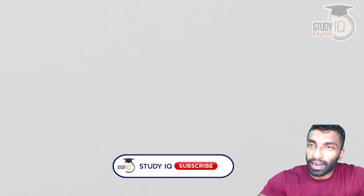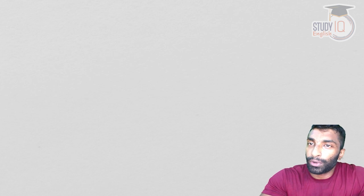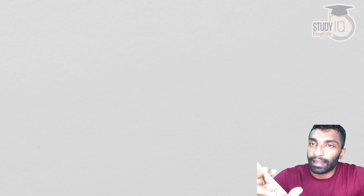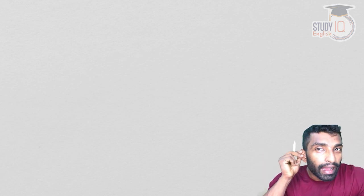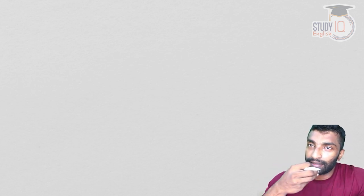Hello guys, welcome to Study IQ. I am Safir. In this session, we are going to continue our discussion on the Mauryan period. We are in the module of Art and Culture and the first chapter is Art and Architecture. We have completed Indus Valley Civilization, which is very important from the perspective of Art and Architecture. We skipped the Chalcolithic period and the Vedic period because there is not much development with respect to this particular topic. We then came to the Mauryan period and discussed the basics yesterday.